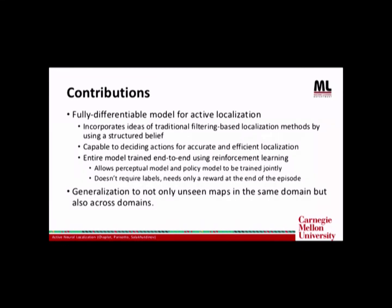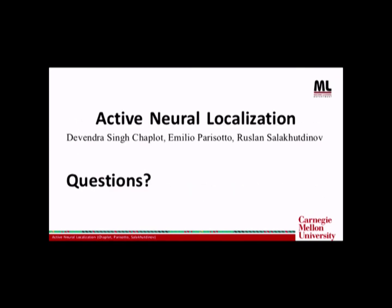So to summarize our contributions, we define a fully differentiable model for active localization. It's capable of deciding actions. And the entire model can be trained end-to-end with reinforcement learning. And we show generalization not to only unseen maps in the same domain but also across domains from Doom environment to Unreal environment. So yeah, that's all I have. I'm happy to take questions.